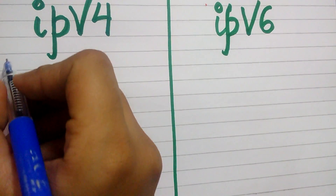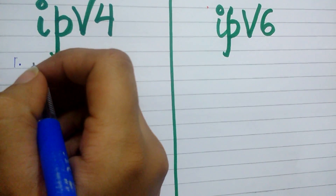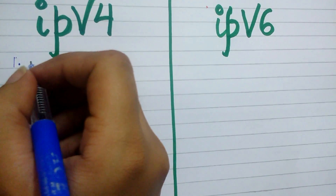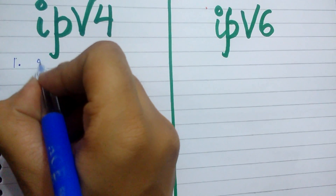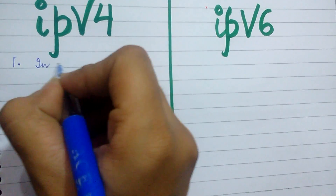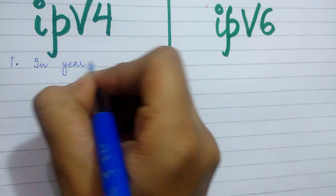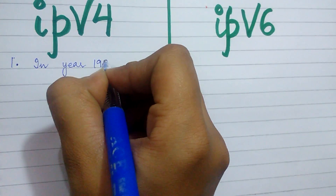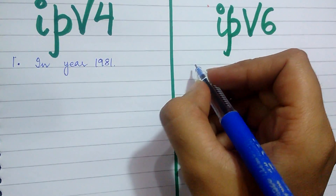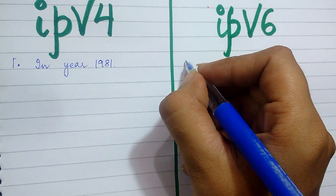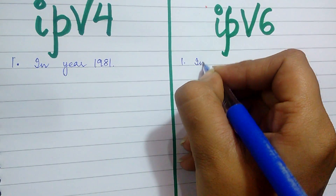The first difference between them is the year of their deployment. IPv4 was deployed in the year 1981, while IPv6 was deployed in the year 1999.